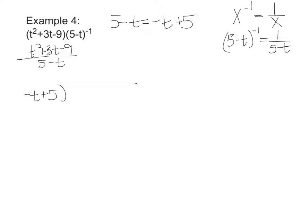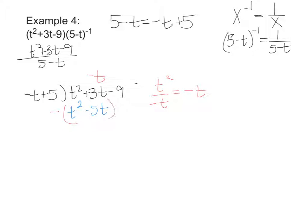So negative T plus 5 goes into T squared plus 3T minus 9. T squared divided by negative T is equal to negative T, so that goes on top. I multiply: negative T times negative T gives me positive T squared, and negative T times 5 gives me negative 5T. Then I subtract, and I end up with plus 5T. The T squared terms cancel to 0, so I get 8T, and I bring down my negative 9.